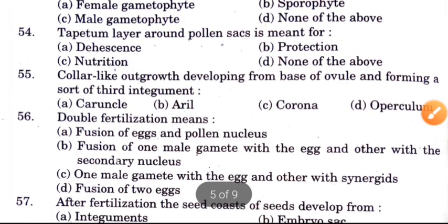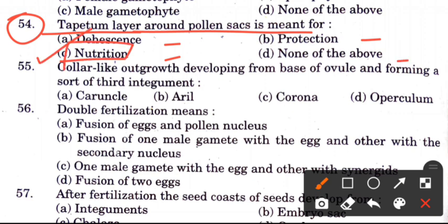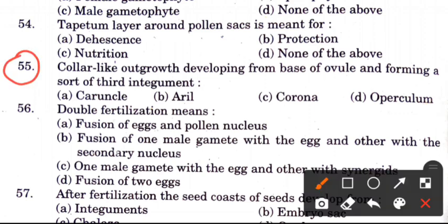Question 54: The tapetum layer around the pollen sac is meant for — options are dye sense, production, nutrition, or none of the above. The answer is C, nutrition, because this layer nourishes the developing pollen grains.